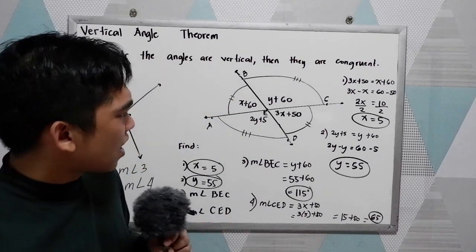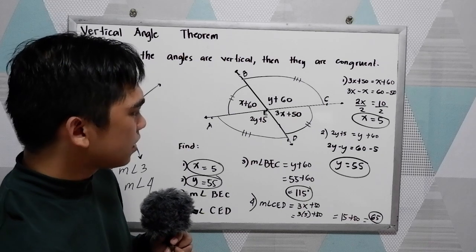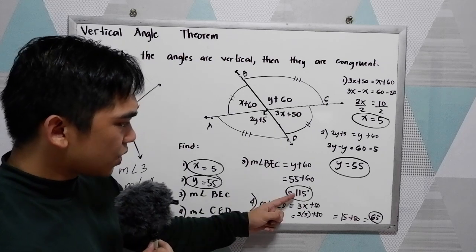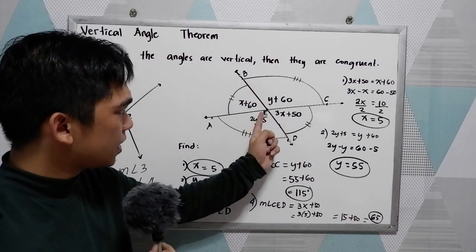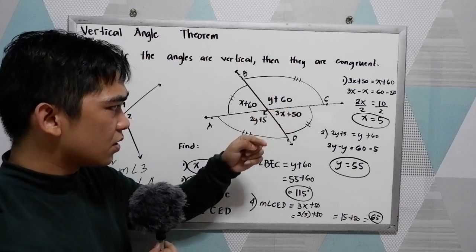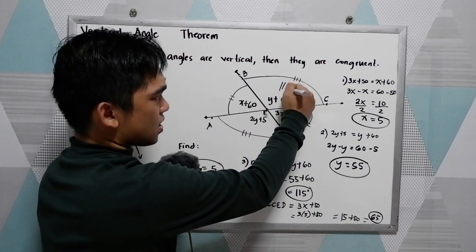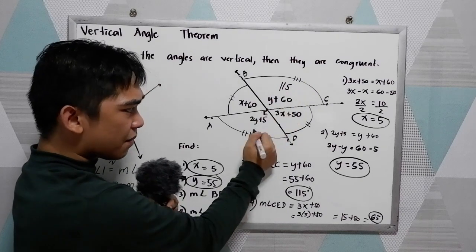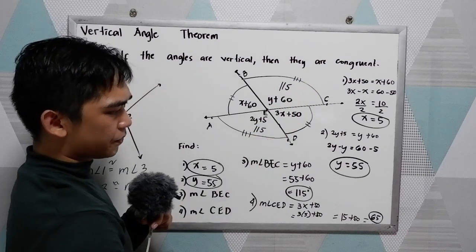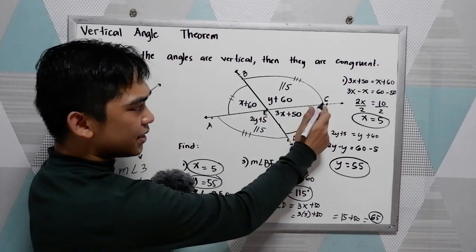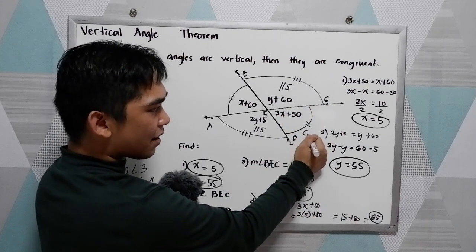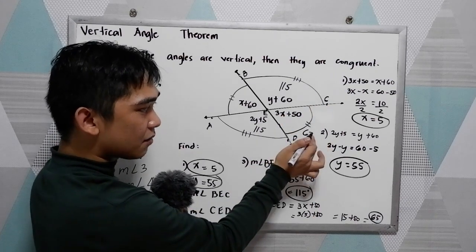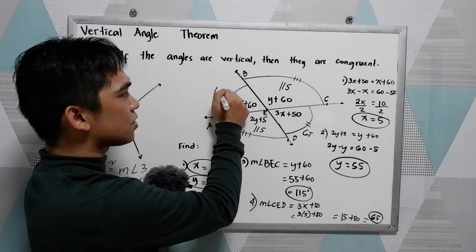Now, if you want to check the answer, we have BEC, which is 115. Applying the theorem, this is also 115. And CED is 65. Applying vertical angle theorem, this is also 65.